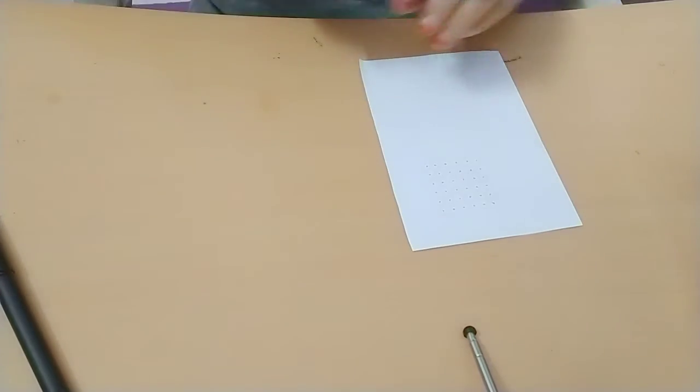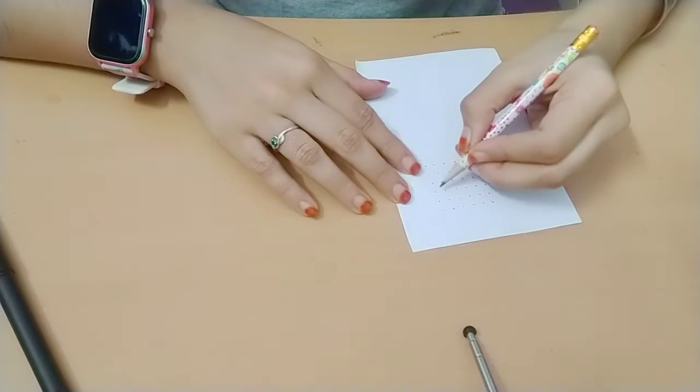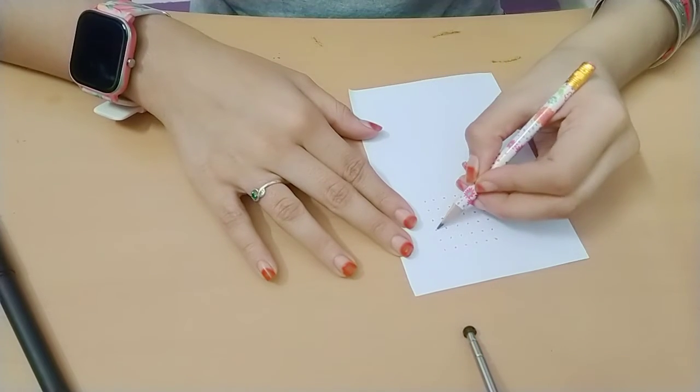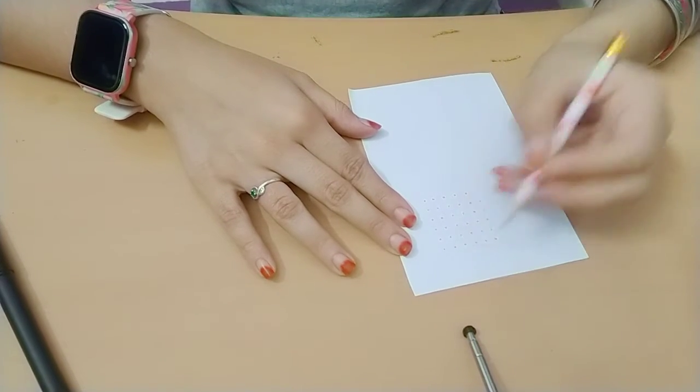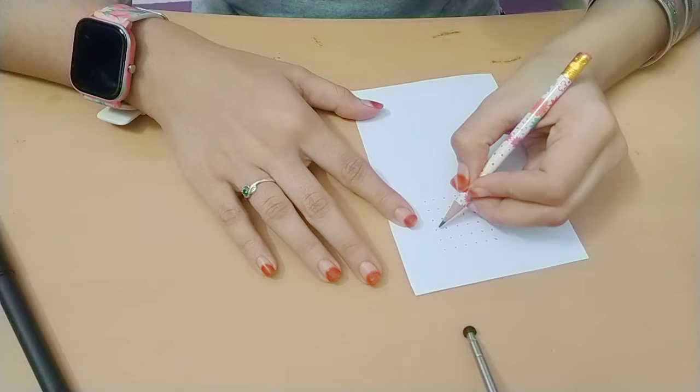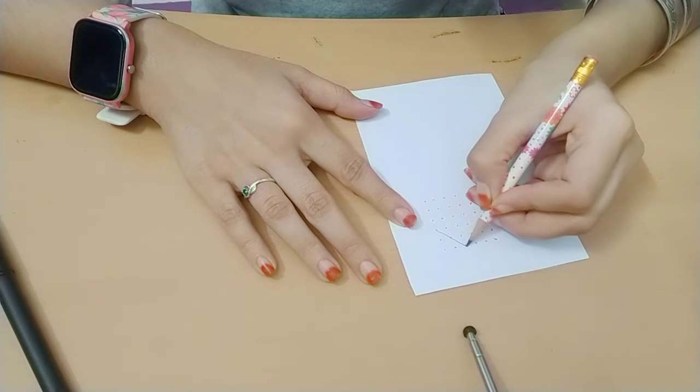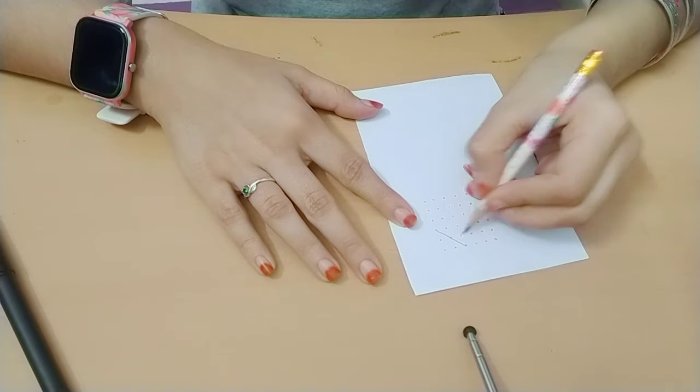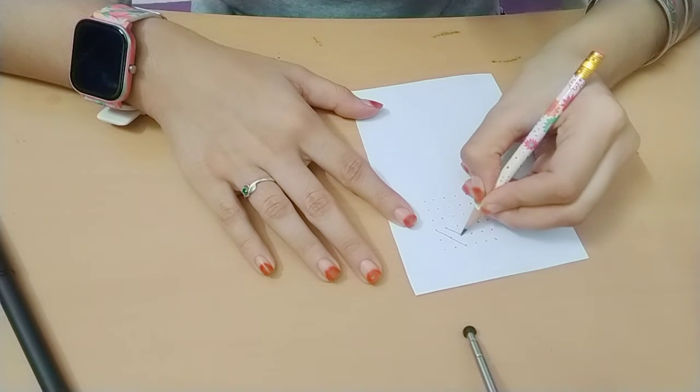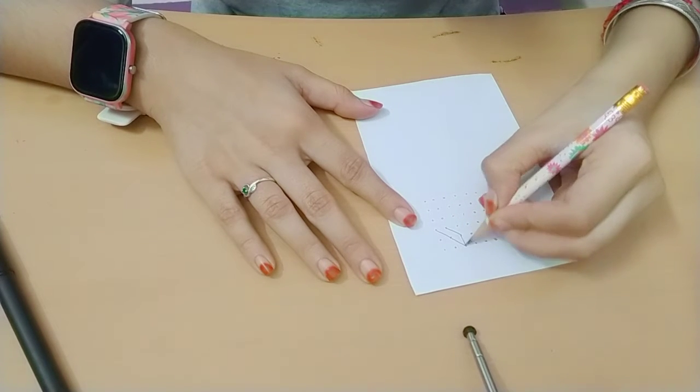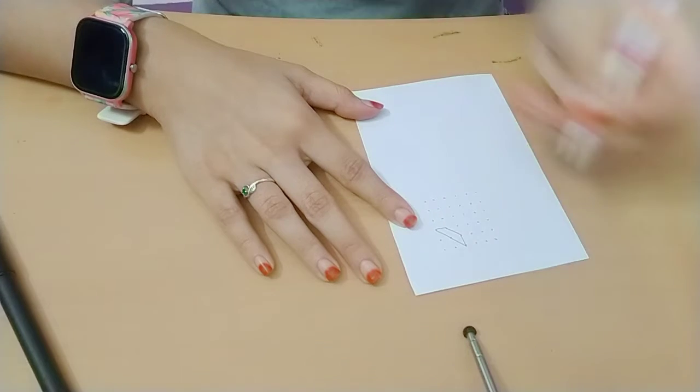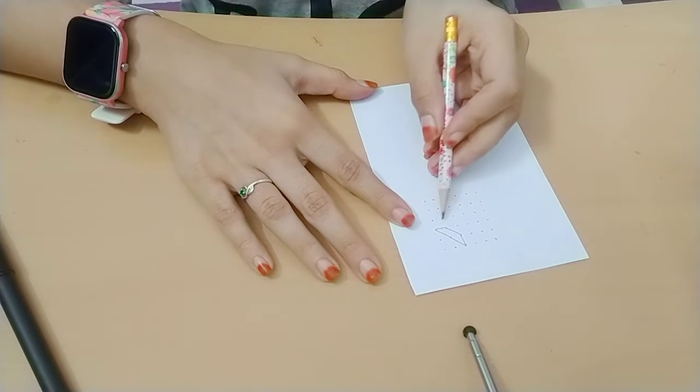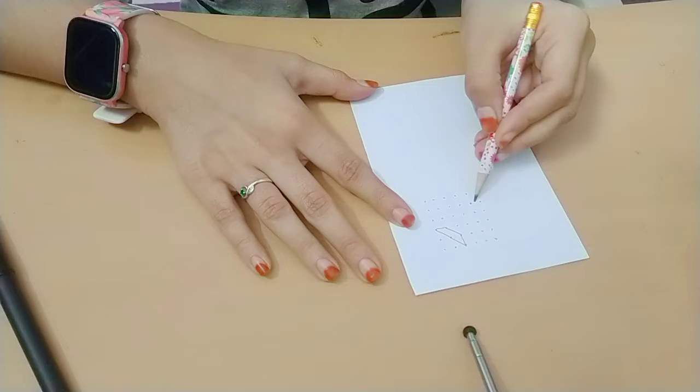Now take a pencil. Find the three dots - one, two, three - and draw a slant line connecting them like this. Same way: one, two, then these two dots and these two dots. You'll get a boat shape. Follow the same way on all three sides.